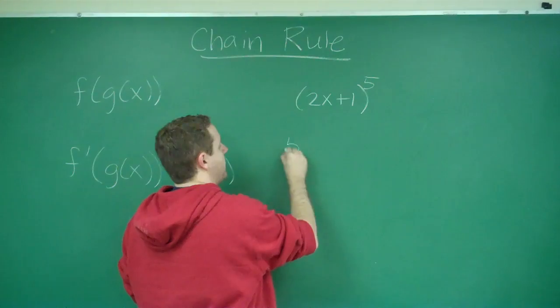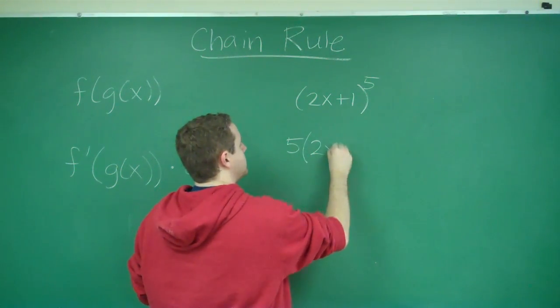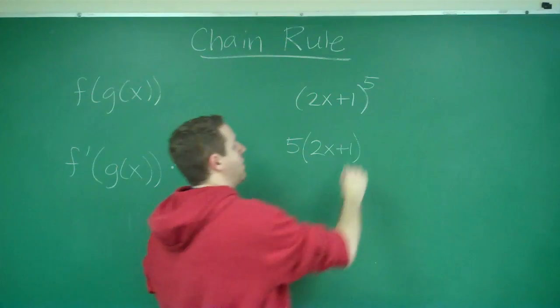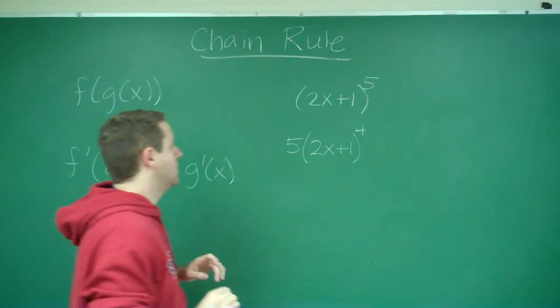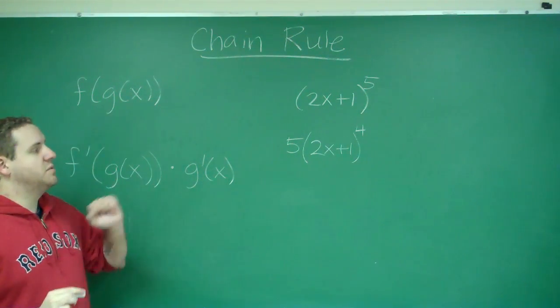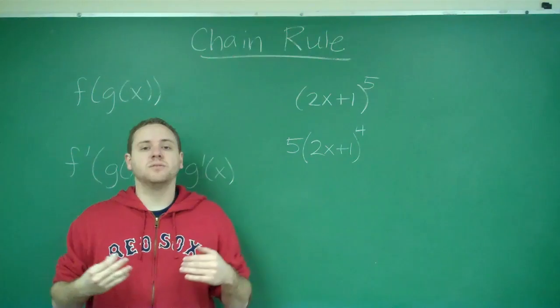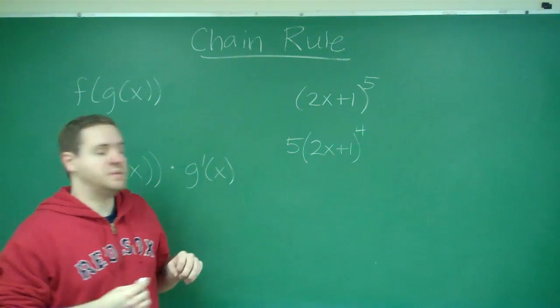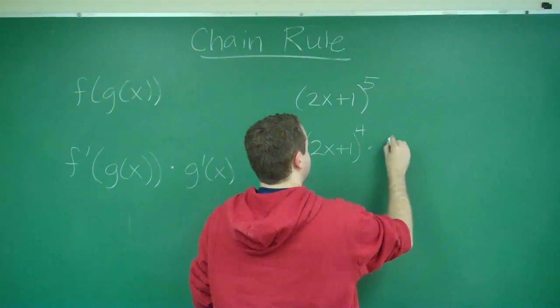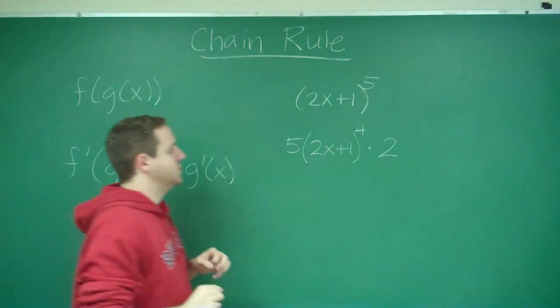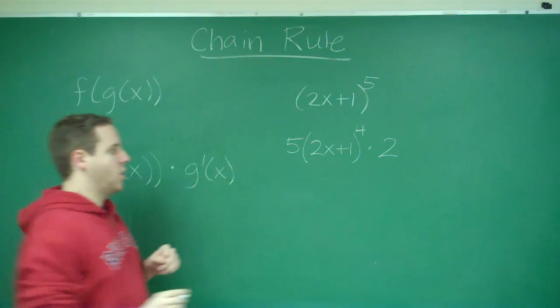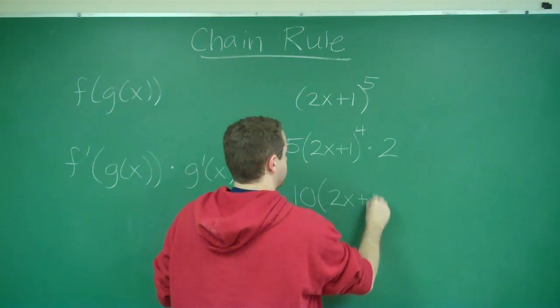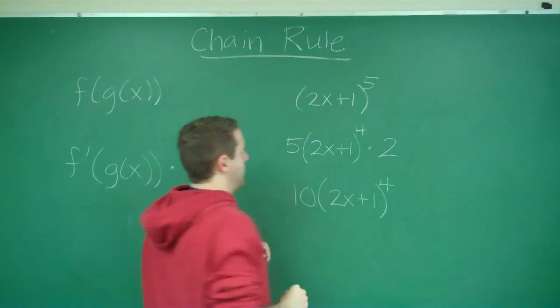So we would still bring our 5 down, we have 2x plus 1, we leave the inside the same, we lower the power by 1. That's just doing the derivative of the outer function. Now our inner function here is 2x plus 1, we have to multiply by the derivative of that inner function, which is just 2. So our full derivative here is 10 times (2x+1) to the 4th power.